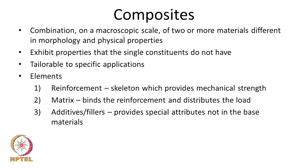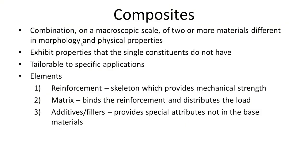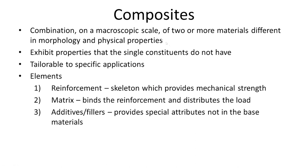Composites are combinations, on a macroscopic level, of 2 or more materials different in morphology and physical properties — for example, silicate and a polymer, carbon fibres and a polymer, or alumina with a polymer. The inorganic may have a very high Young's modulus while the polymer has a very low modulus. They exhibit properties that single components do not have, and properties are tailorable to specific applications by varying composition.